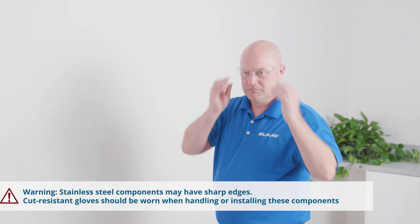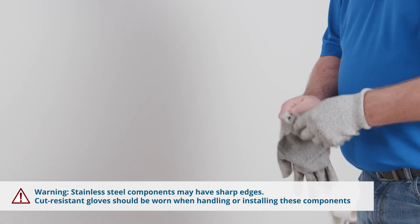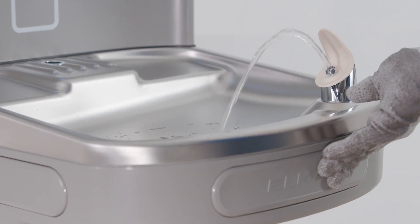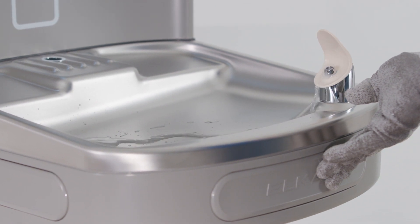Put on safety glasses and cut resistant gloves, as metal edges can be sharp or rough. Turn off the water to the unit, then dispense the water from the cooler and bottle filling station until they are empty. Then unplug the unit.